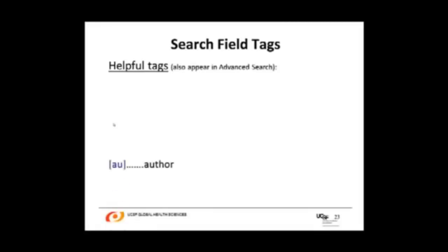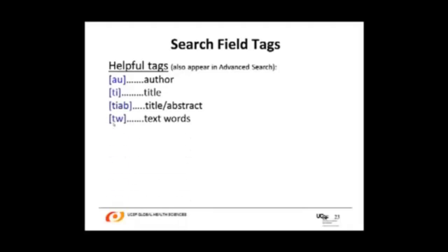Search field tags are helpful tools for your PubMed search. AU is for author, TI for title, TIAB for title and abstract, and TW for text words. For example, if you type hemorrhage [TIAB], you are asking PubMed to search all titles and abstracts for the word hemorrhage. Another example: typing "Central America" [TW] will search all words in the text of the article for the phrase Central America. Search field tags require you to place the tag in brackets after the word or phrase.